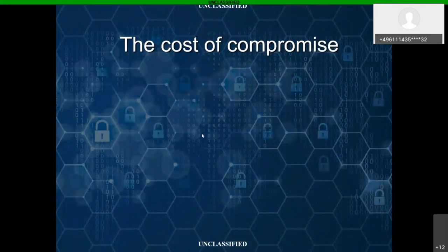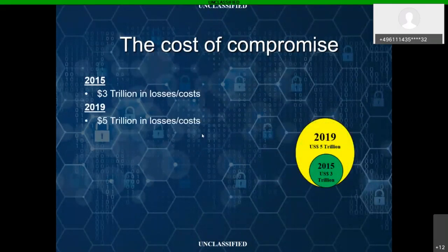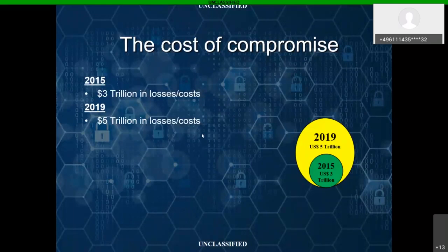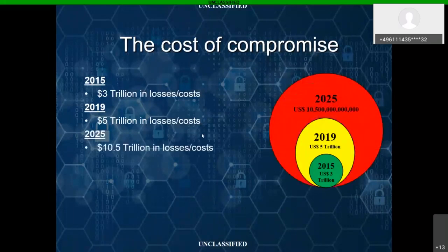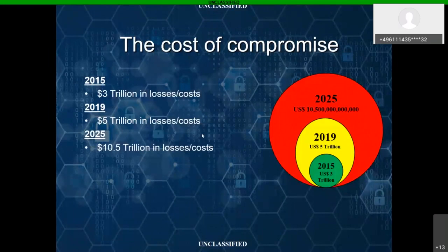How much is this compromise of information costing society? From 2015 to 2019, we saw the annual global cost of cybercrime rise from $3 trillion to $5 trillion a year — a 60% increase over a four-year period. Projections indicate that by the year 2025, that cybercrime impact will have an annual total cost of approximately $10.5 trillion, a 110% increase from today. If you average that out across every inhabitant on the planet, it comes out to about $1,500 per person.